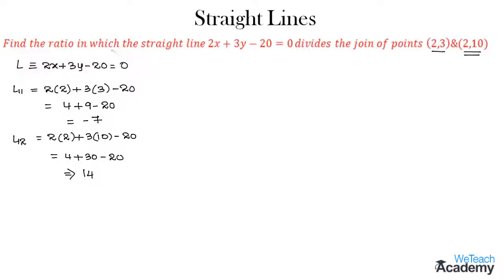The given straight line L equals 0 divides the given line segment in the ratio minus L11 to L12, and here L11 and L12 have opposite signs. So we get the ratio as minus of minus 7, that is plus 7, to 14. That implies we get 1 to 2 in which the straight line divides the join of points. Therefore this is internal division.